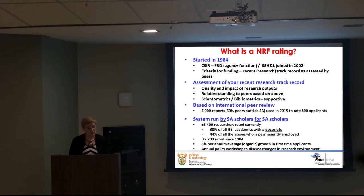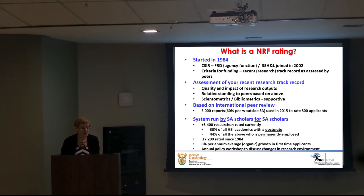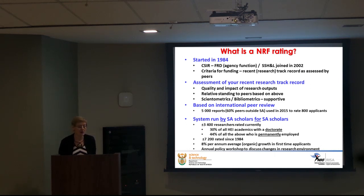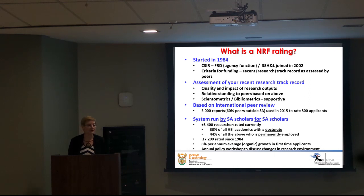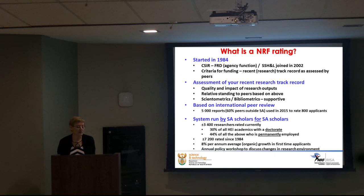It is based on international peer review, as it was in 1984. In 2015, we used 5,000 reports to rate 800 applicants, and 60% of those reports came from outside South Africa. The NRF rating system is run by South African scholars for South African scholars — the NRF is basically the secretariat; we don't make the decisions. The decision is made by peers, locally and abroad. Currently, we have 3,400 rated researchers.